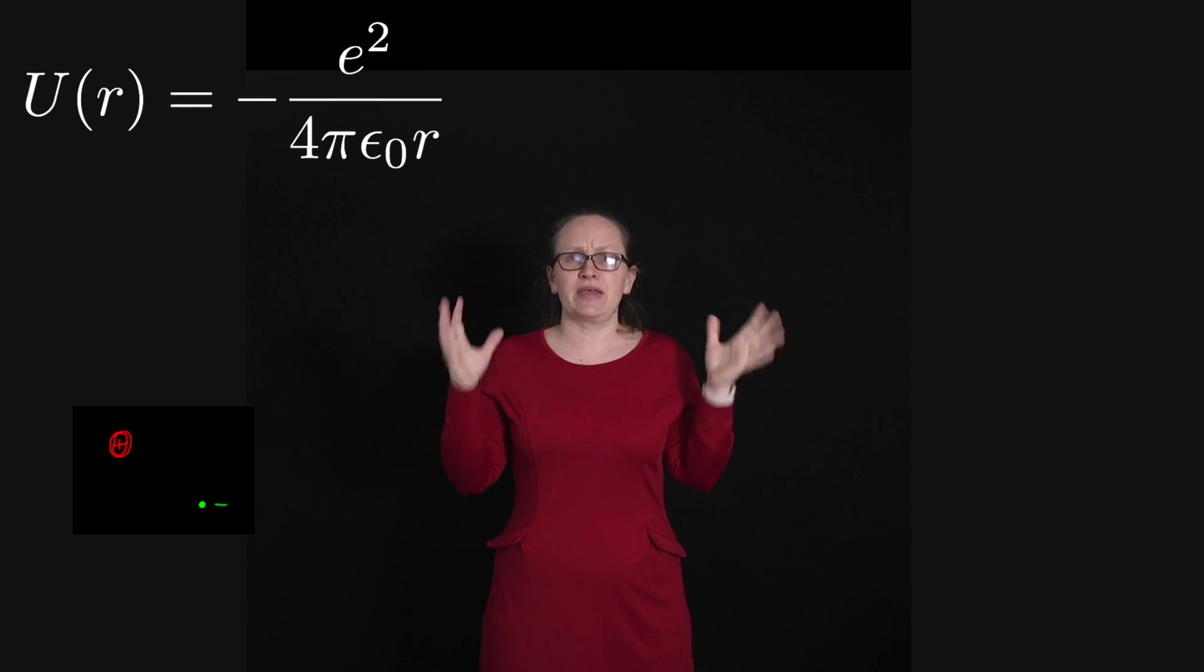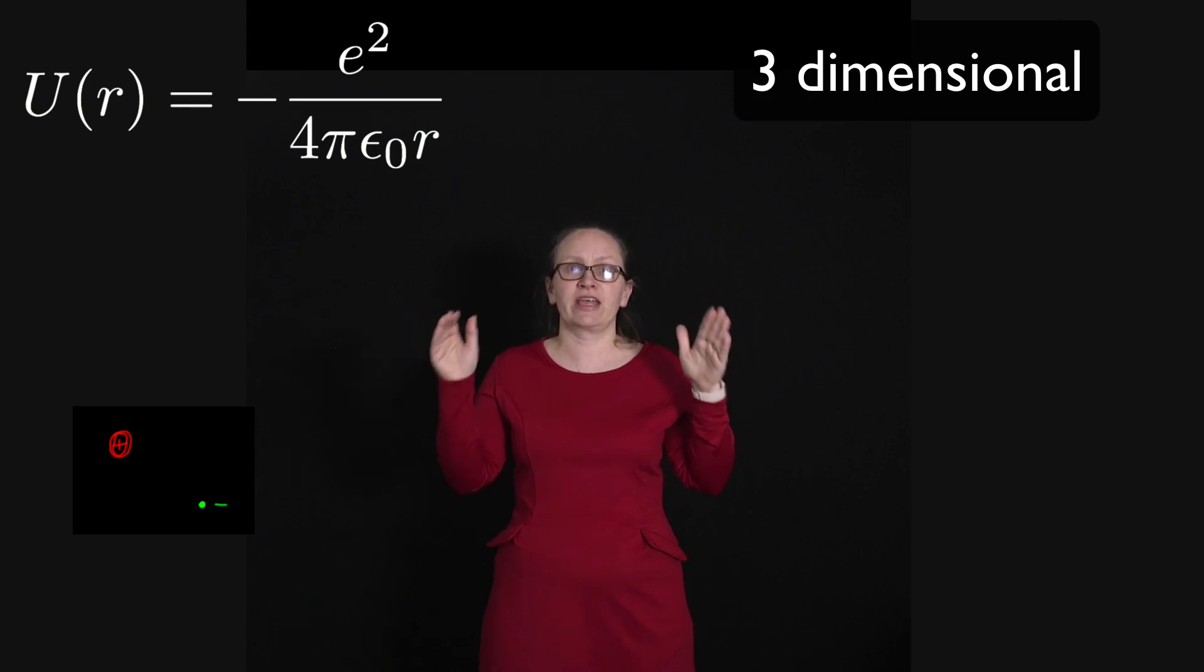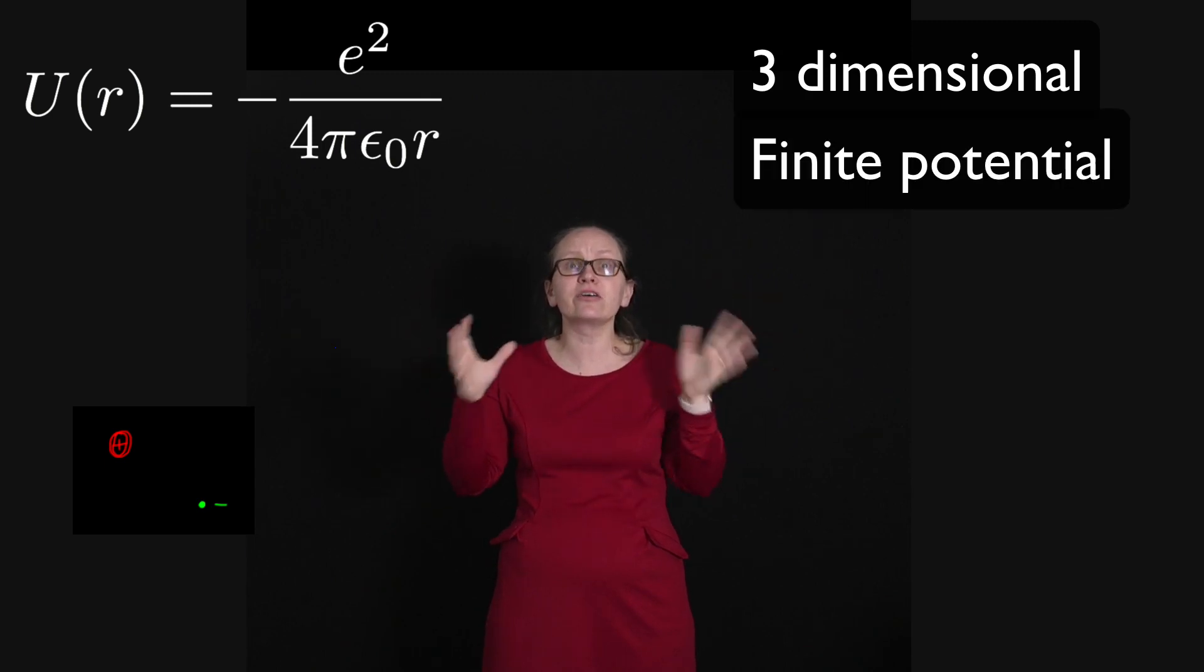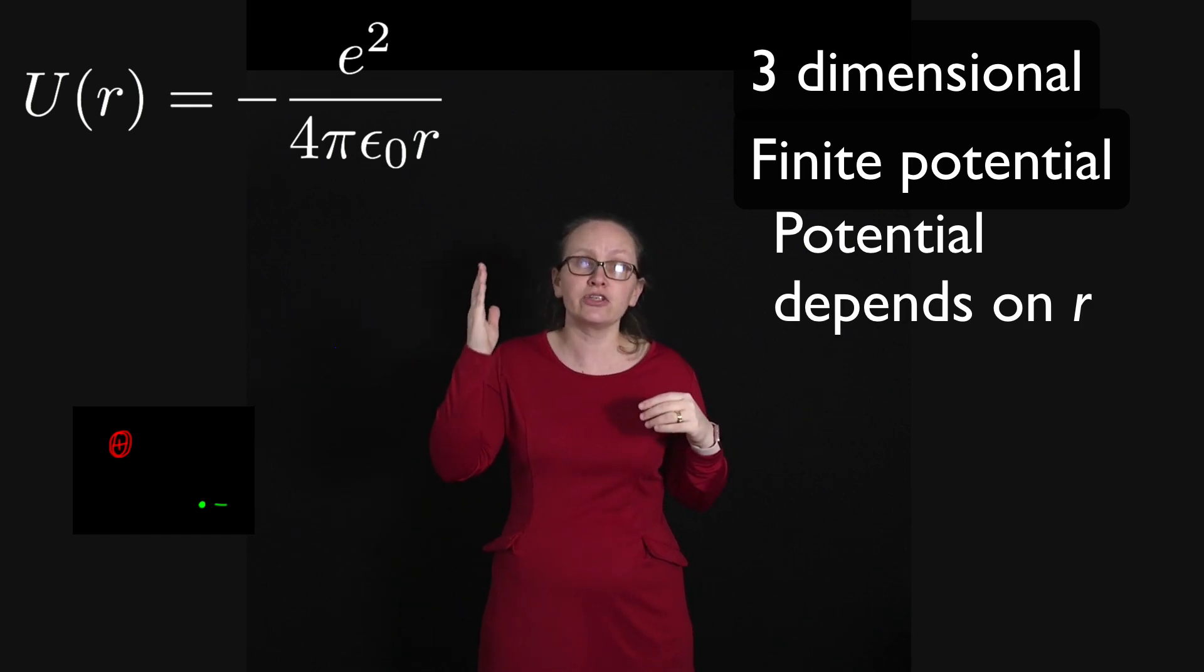Now this is a bit more complicated than our infinite or finite potential well. For a start, an atom is a three-dimensional object whereas our potential wells we were just considering in one dimension. The atom is like a finite potential well because it's possible for the electrons to escape from the atom, and what makes it even more complicated is that we don't have a well-defined wall height here because as you can see from the potential function, the potential depends on r.